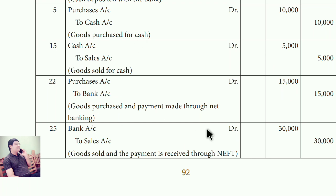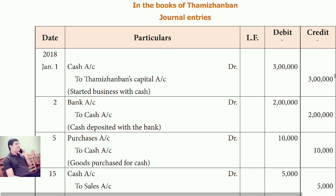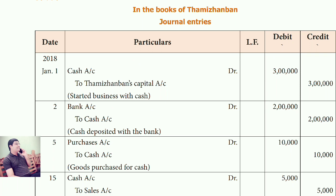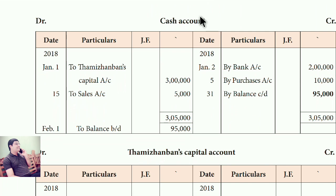Now I'll explain how to prepare the ledger account. Take two papers and open your ledger notebook to a double new page. In the center of your book, on the left-hand side write 'Cash' and on the right side write 'Account' in the center of your page. This is the ledger.